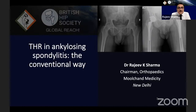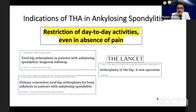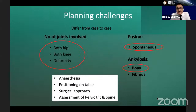My mandate today is to speak on total hip arthroplasty in ankylosing spondylitis the conventional way. Indications include not just pain relief but also restriction of day-to-day activities even in the absence of pain. There are multiple challenges differing from case to case: number of joints involved, both hips, fibrous ankylosis of both knees, bone effusion or fibrous ankylosis, type of anaesthesia, position on the table, surgical approach, and assessment of pelvic tilt and spinal mobility.